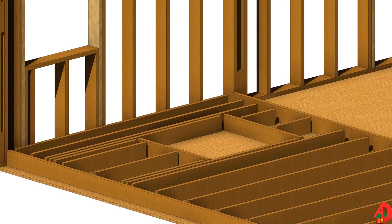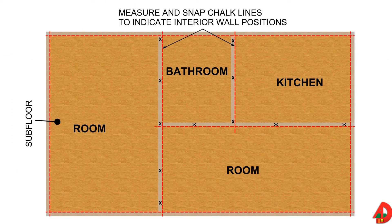Wall components are nailed together and the complete wall is raised into place. This is an example of a wall that lays on the subfloor and is about to be nailed together. Carpenters must lay out where each wall is to be placed before construction begins. There are two types of procedures involved in wall layout. The first one is horizontal plate layout. The first step in wall layout is to snap chalk lines on the floor to indicate the exact location of walls, according to the floor plan.